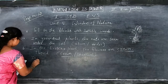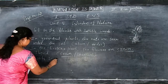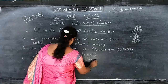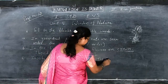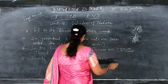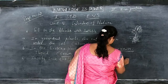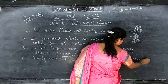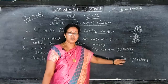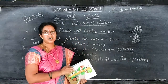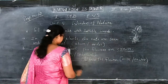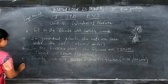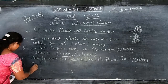Insects suck the dash from flowers. The choices are milk and nectar. Insects suck nectar from flowers — N-E-C-T-A-R. So nectar is the right answer. You write nectar here.